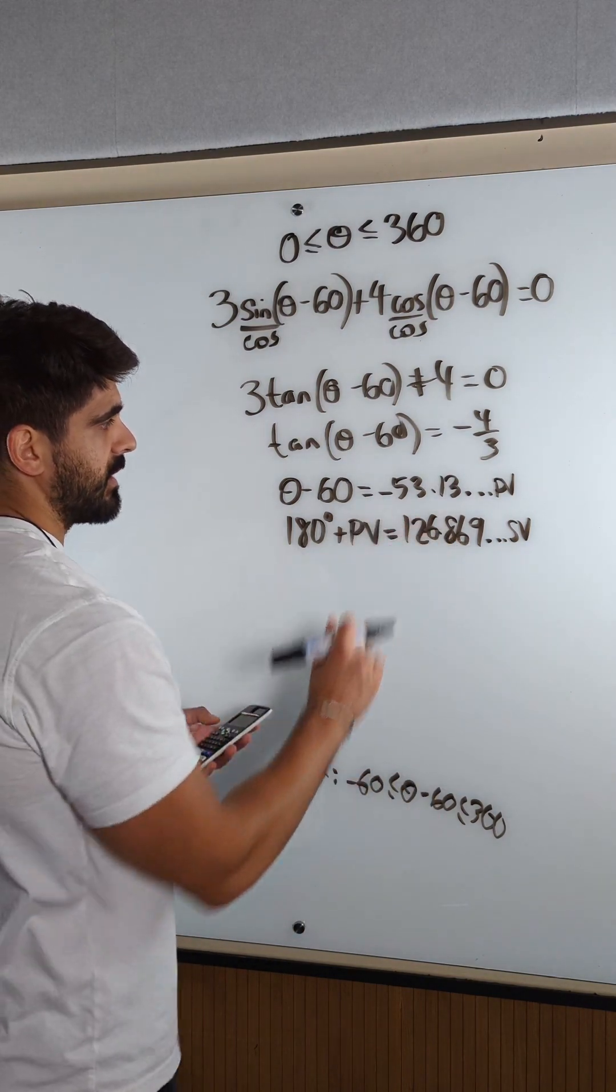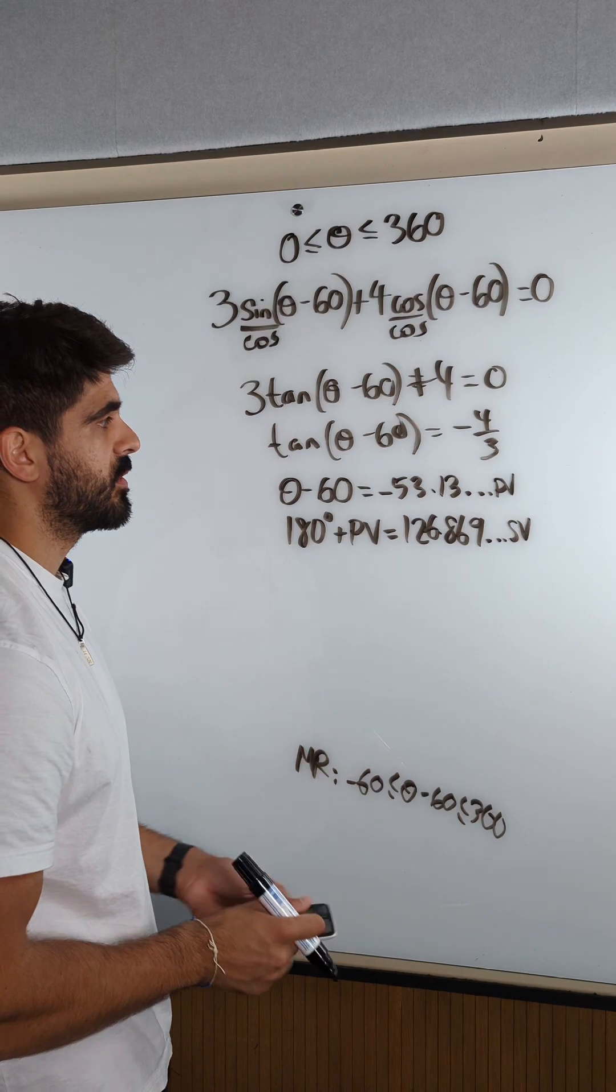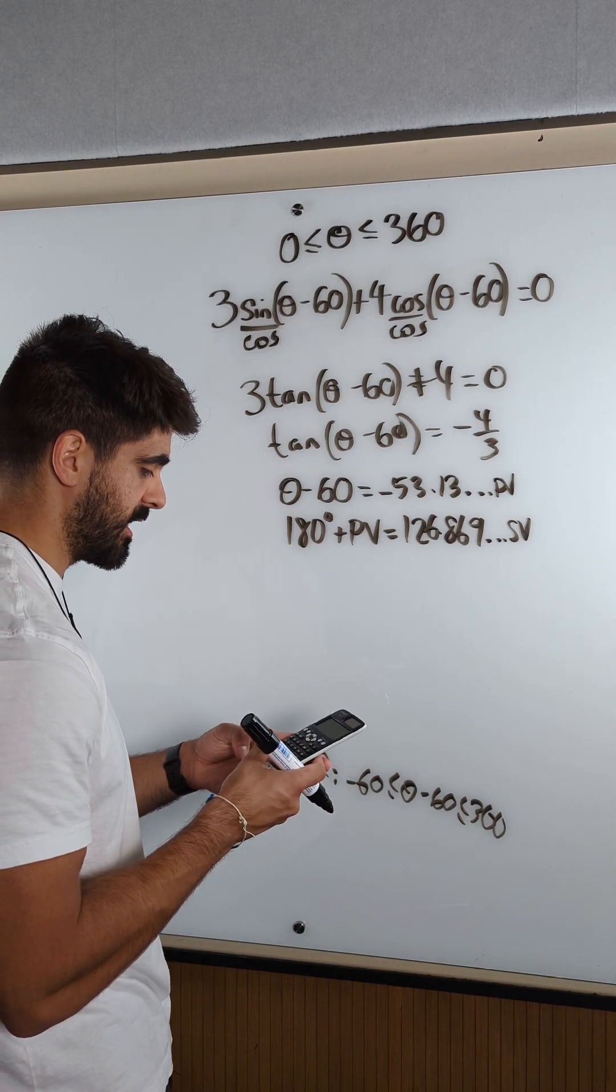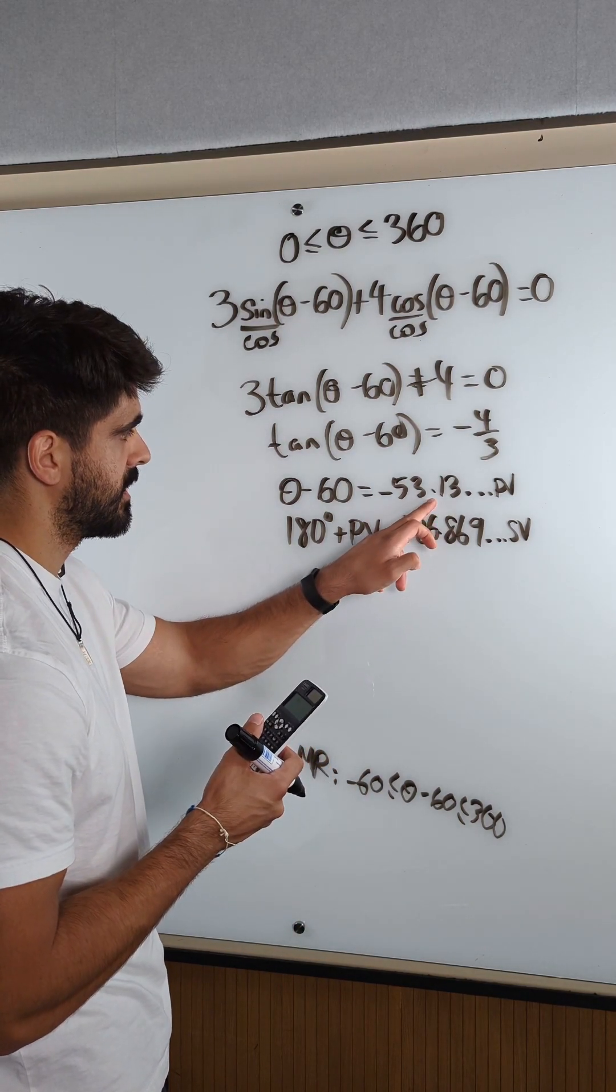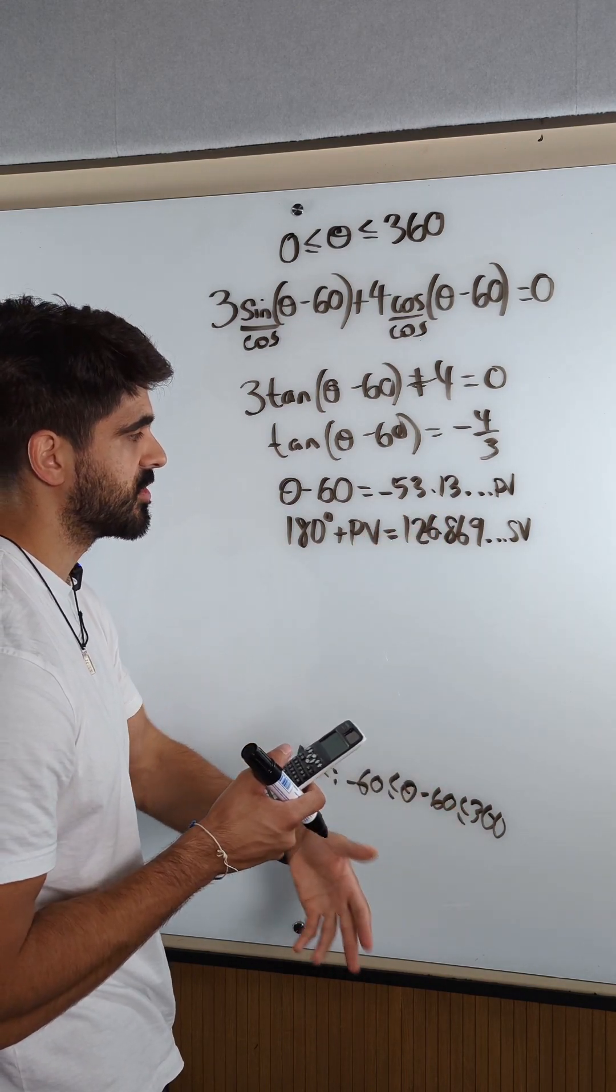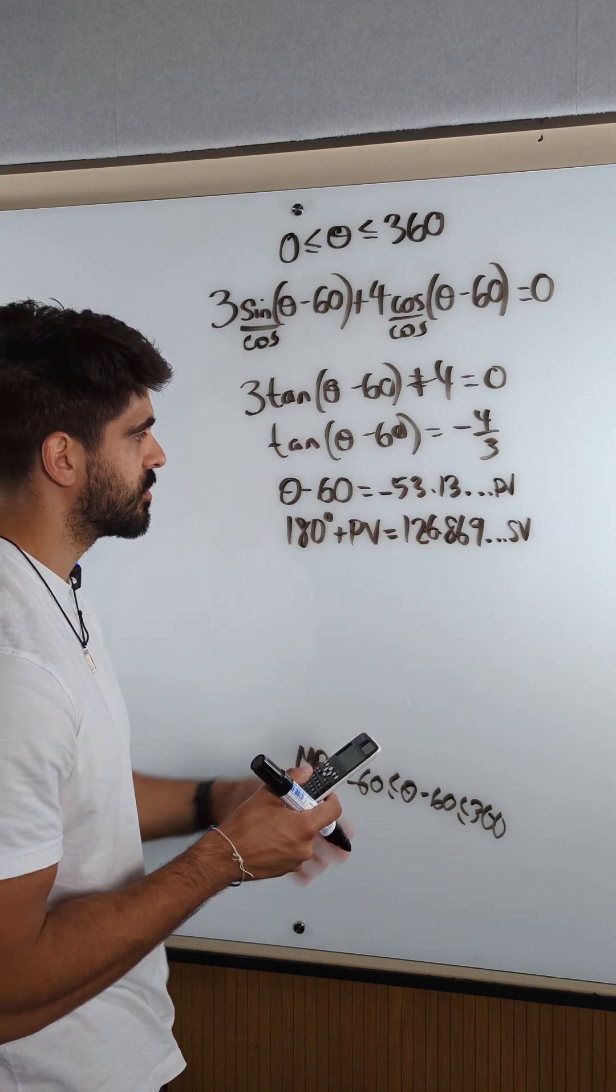Now the next thing you're going to do is you're going to add or minus 360 to see if they fit within the modified range. Now they're not. If you take a, this value, and you add 360, it gives you 306. It's too big. So these are only two values.